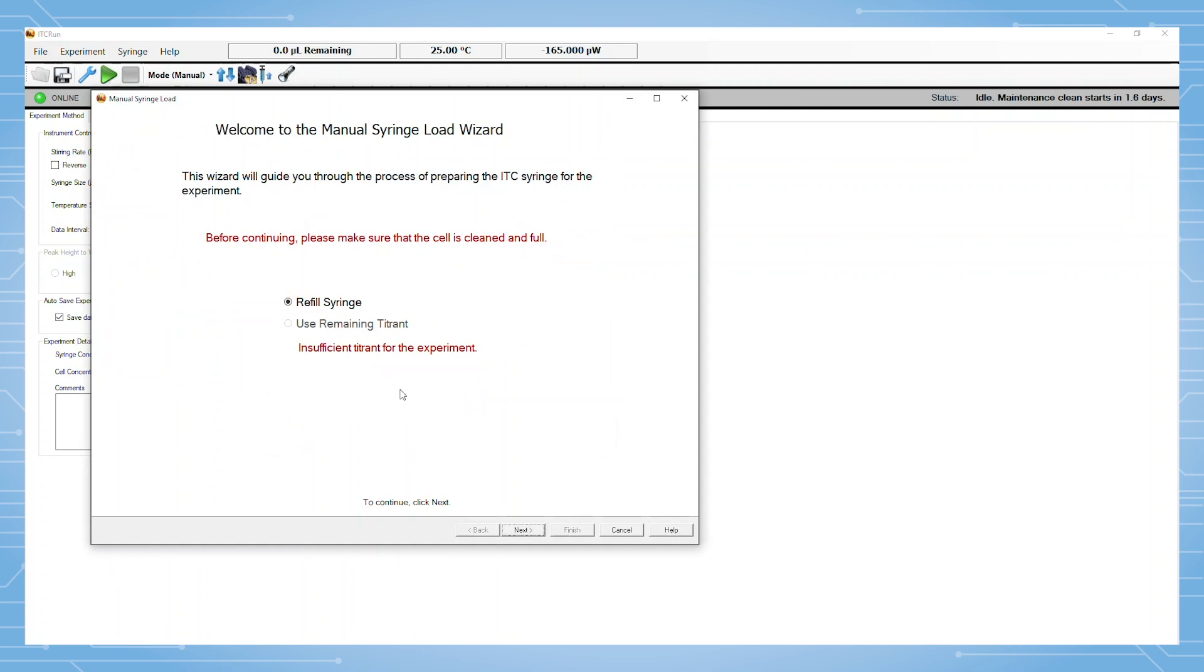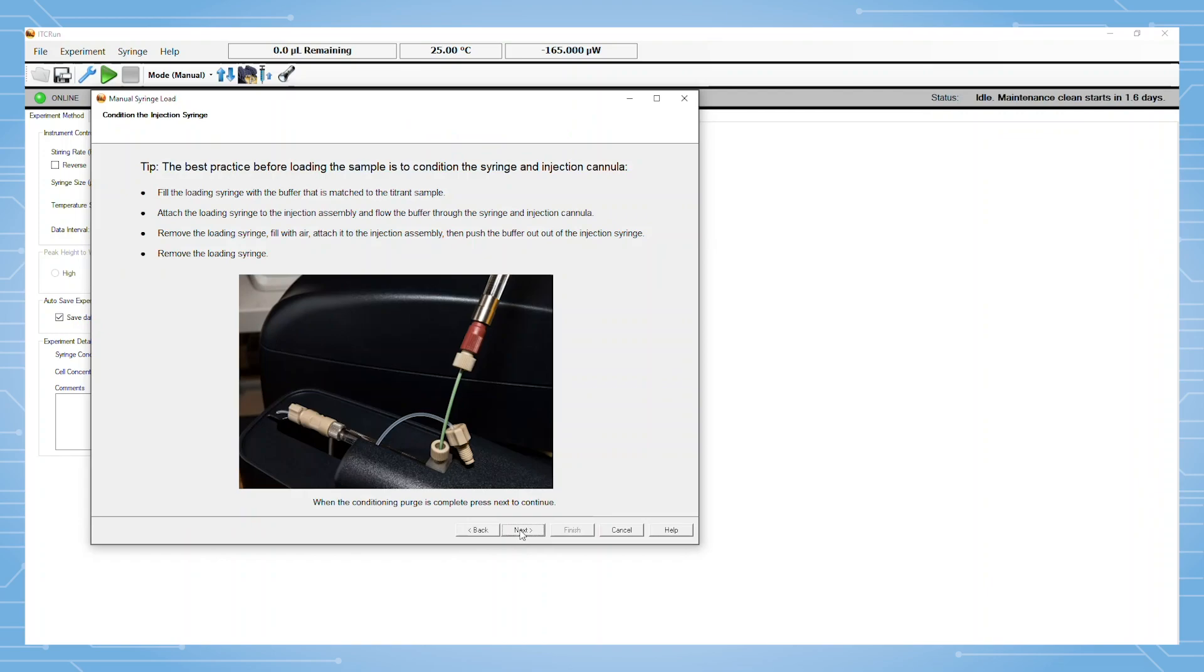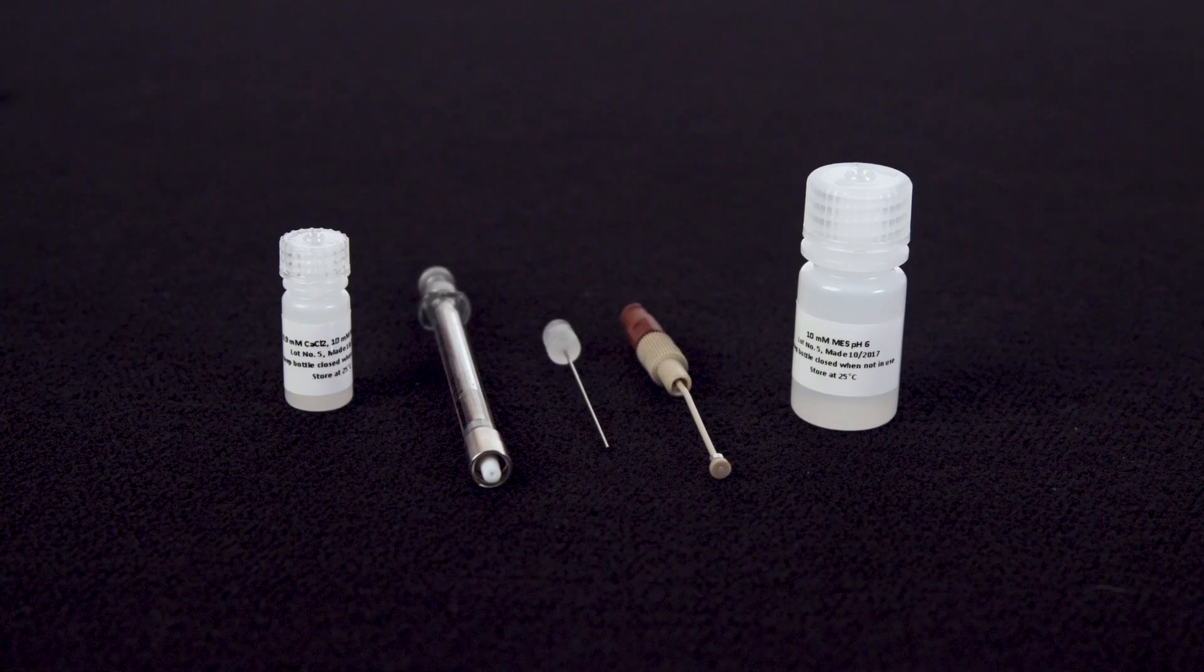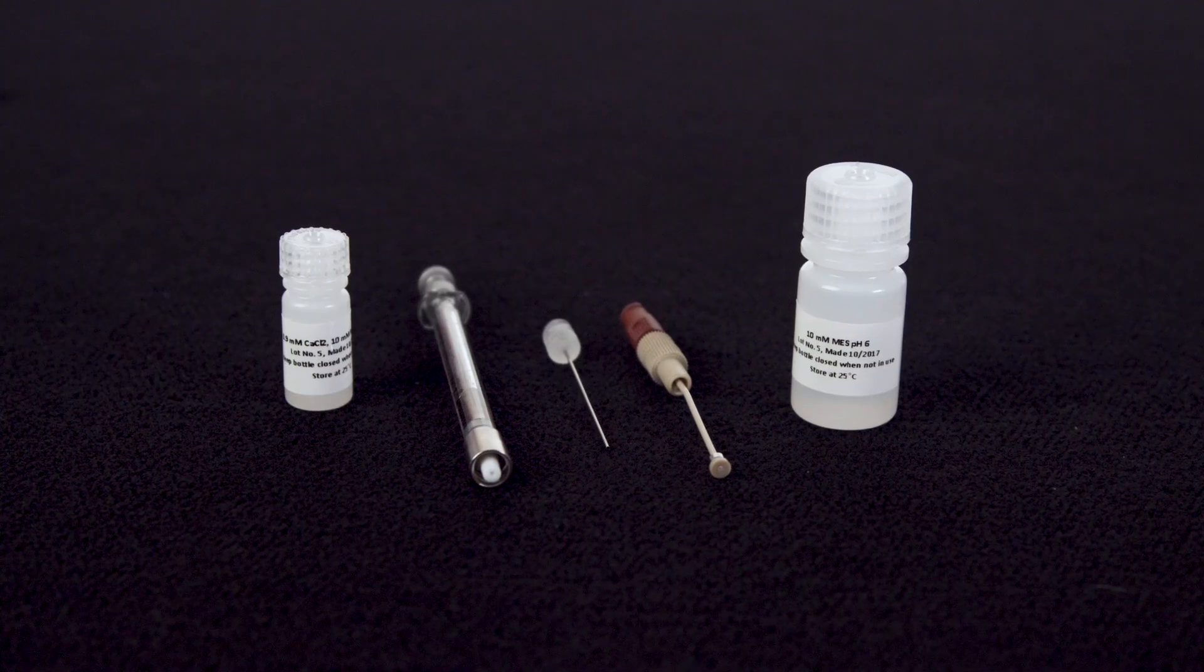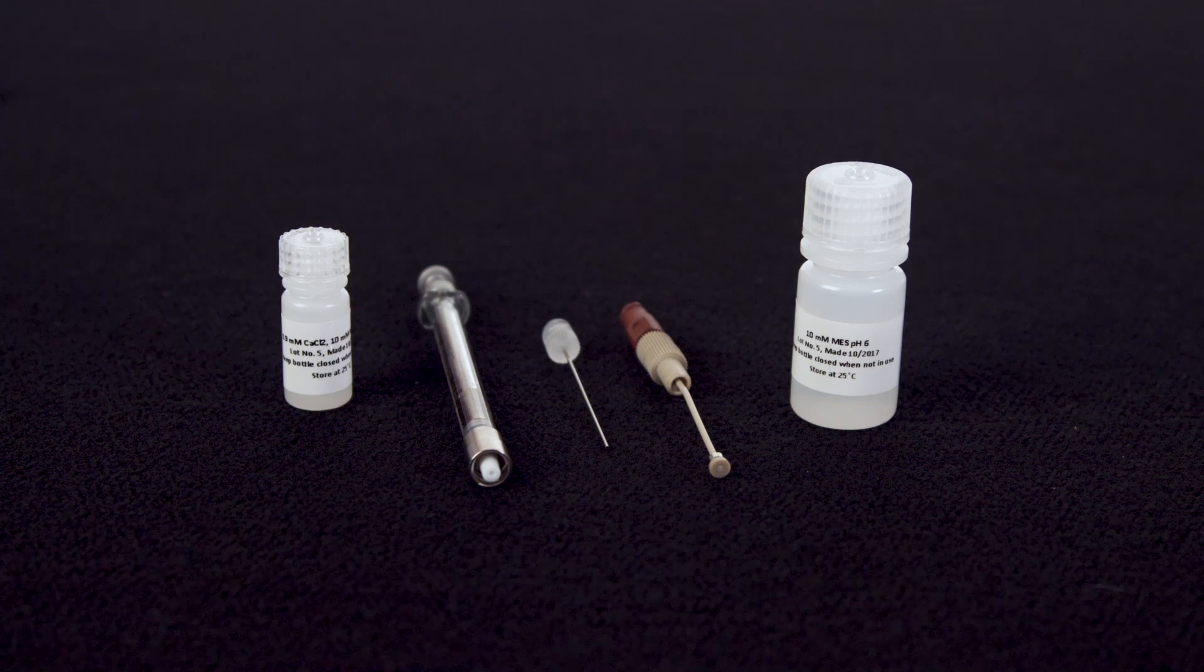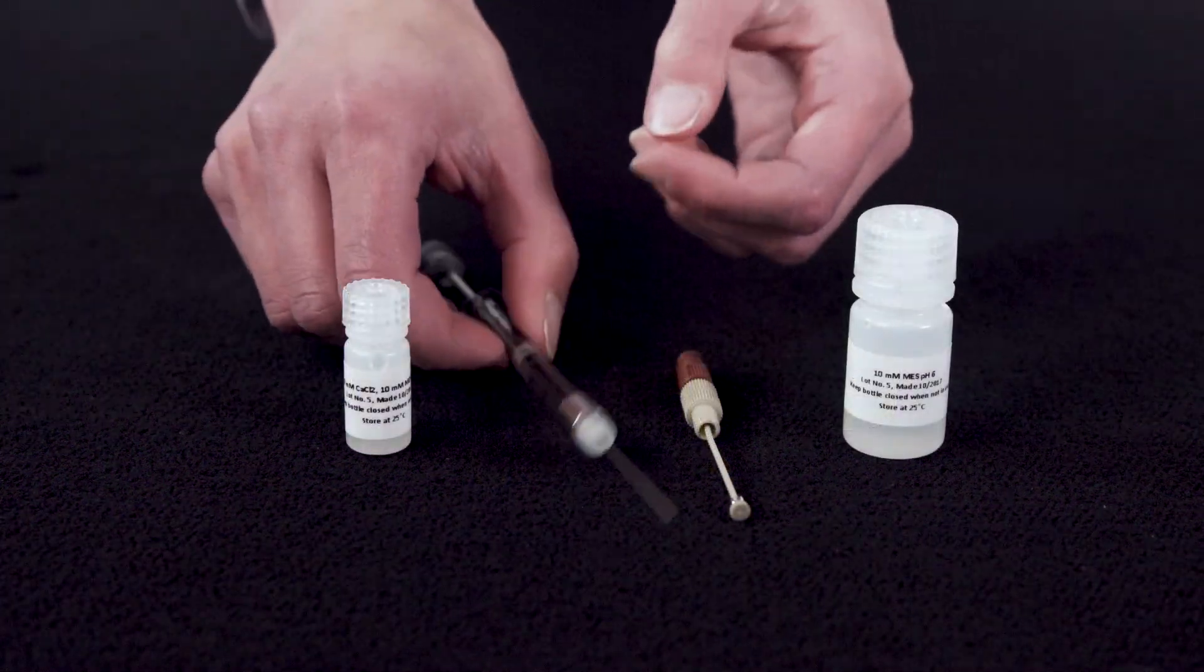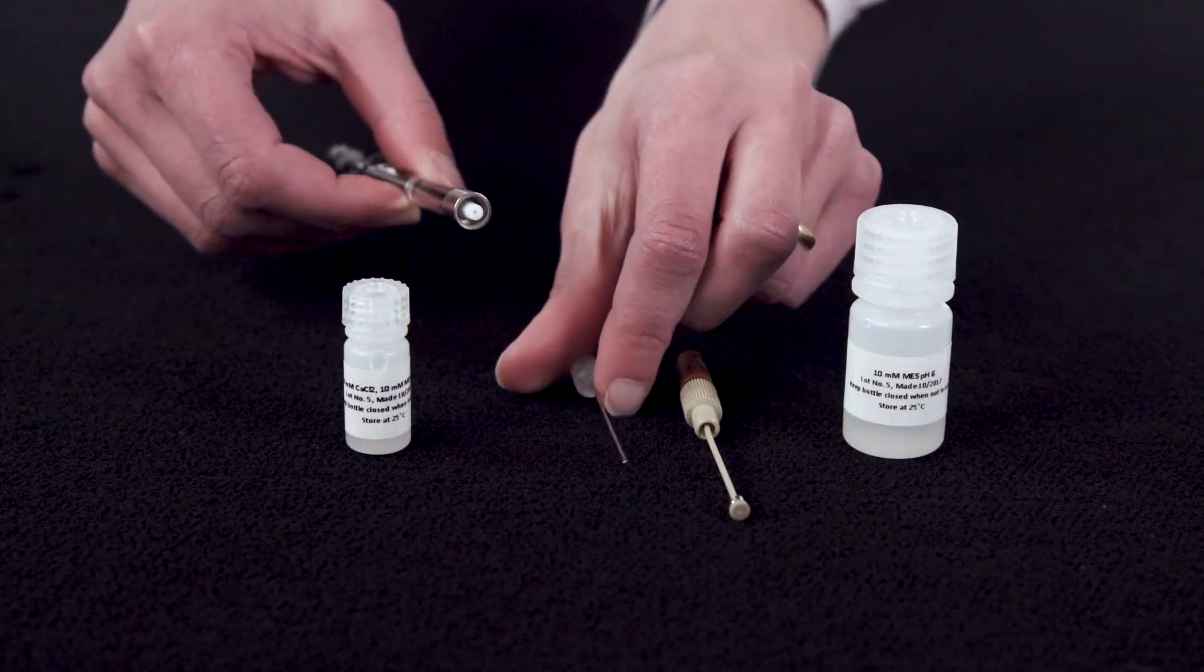The wizard prompts the user to load the cell if they haven't already. Use the needle and filling syringe with 200 to 500 microliters of the buffer that you're using for the experimental titration. Remove the needle and replace it with the adapter tool.